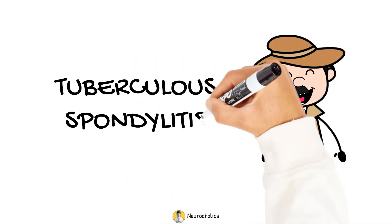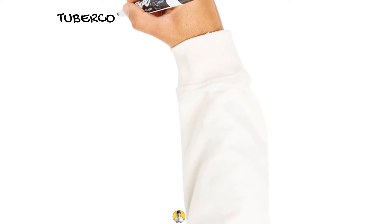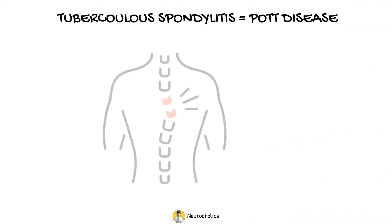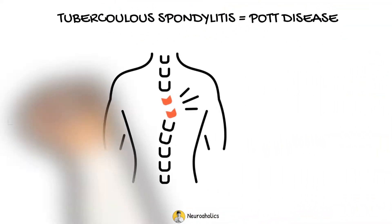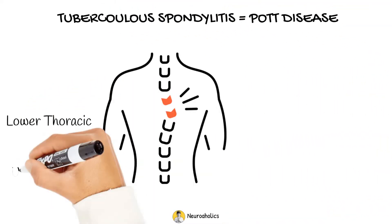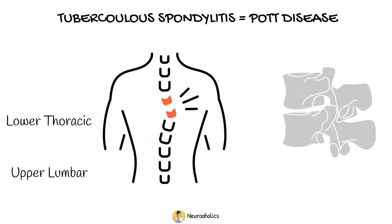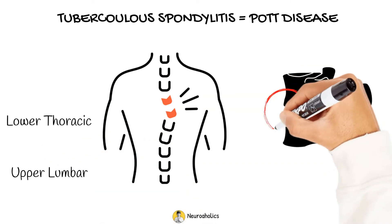Tuberculous spondylitis, also known as Pott disease, most frequently involves the lower thoracic and upper lumbar regions, with less frequent involvement in the cervical and upper thoracic regions.